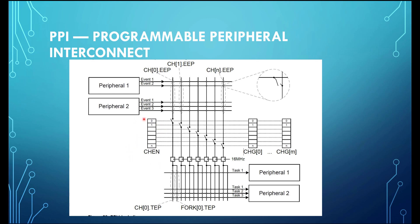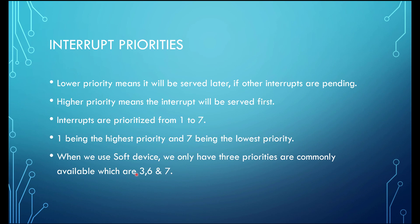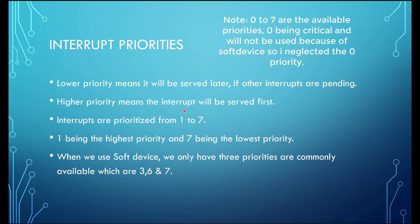The interrupts are based on priority levels. Higher priority means it will be served first, and lower priority means the interrupt will be served later. Interrupts are prioritized from one to seven — one being the highest priority and seven being the lowest. Be careful: beginners make this mistake a lot, so remember that priority one is the highest and seven is the lowest.